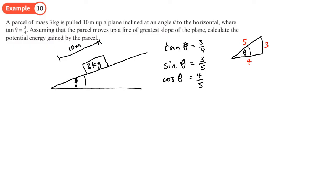This object has gone 10 meters along the slope at angle theta. The vertical height it's gone up is 10 sin theta. We've worked out sin theta, so it's 10 times three-fifths, which is 30 over 5, which is 6. So it's moved up by six meters. We're now ready to work out the gain in potential energy.